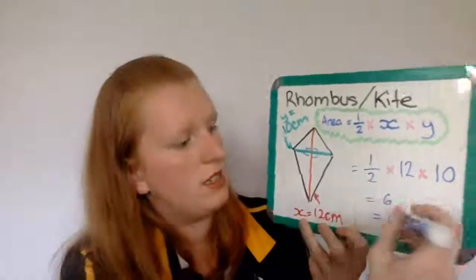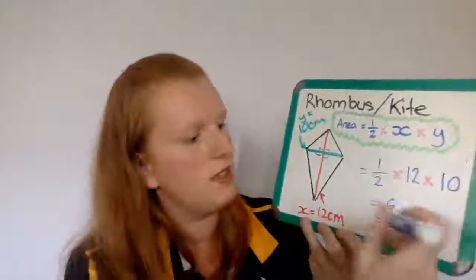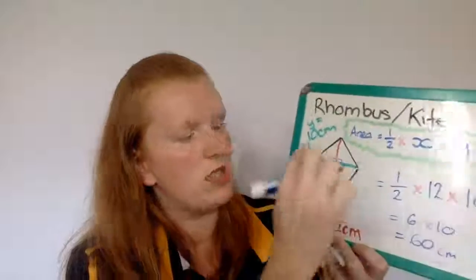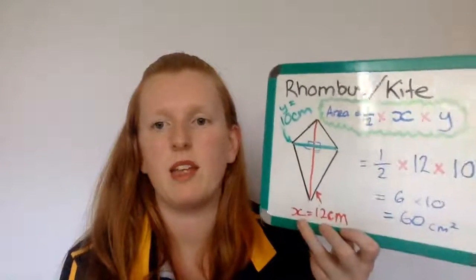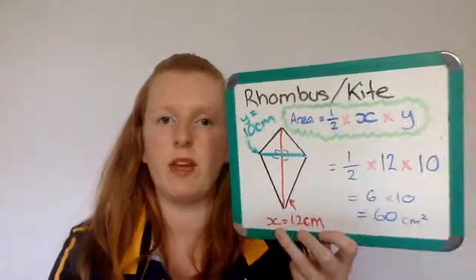Now I can't forget my units. In this case, they're centimetres. So centimetres, and because it's a 2D shape that I'm finding the area for, I put a little squared at the end. There we go. So we have our rhombus.